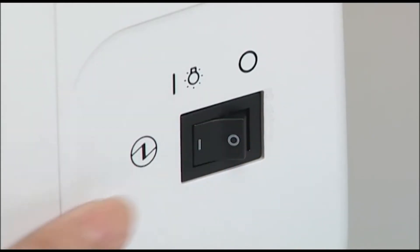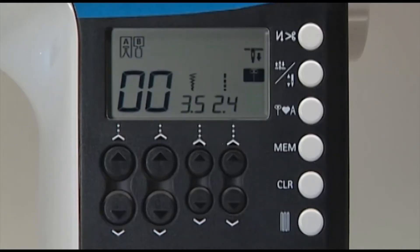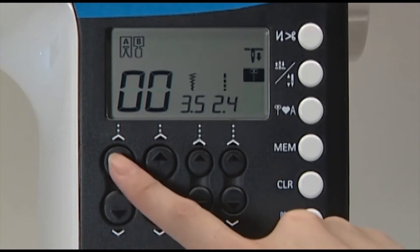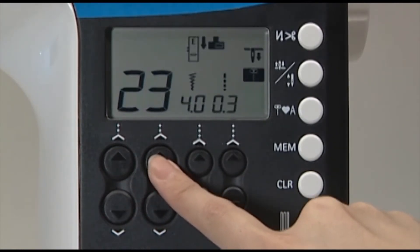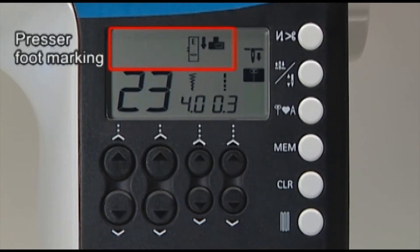When you turn on the power, the LCD screen indicates the center needle position straight stitch. Use the pattern selection buttons below the screen to select a pattern. The screen shows the number of the stitch pattern and the marking of the presser foot to be used.